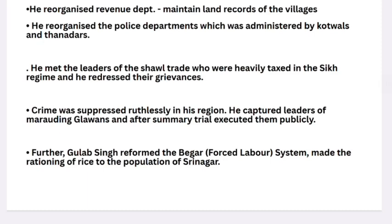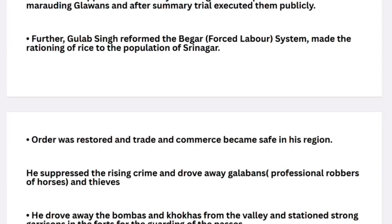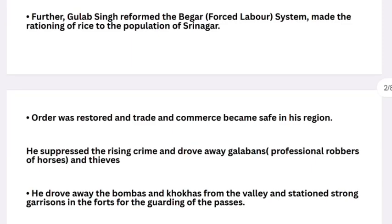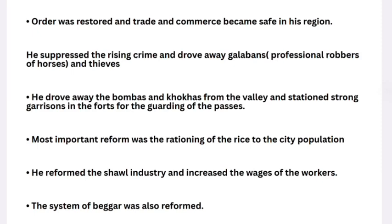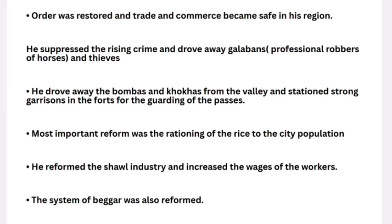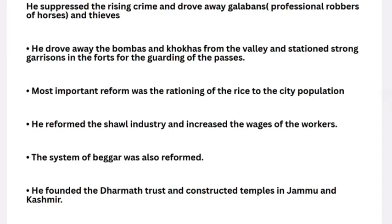Gulab Singh reformed the bhaiqar system — which we call forced labor. He made the rationing of rice to the population of Srinagar, the first time rationing was started for the people of Srinagar. Order was restored and trade and commerce became safe. He suppressed crime and drove away professional robbers of horses; 34 were executed publicly. He brought all the guards from villages and stationed strong garrisons in the forts.